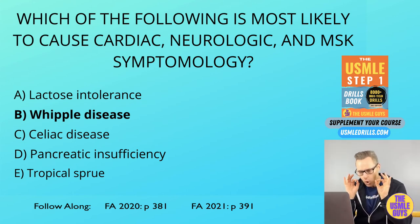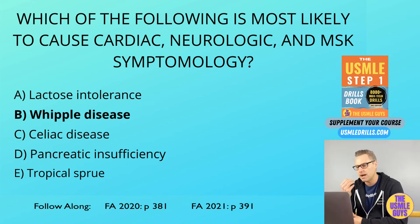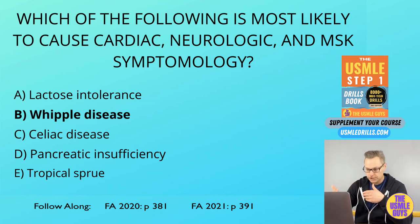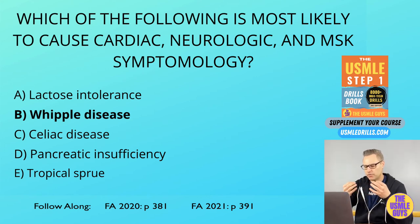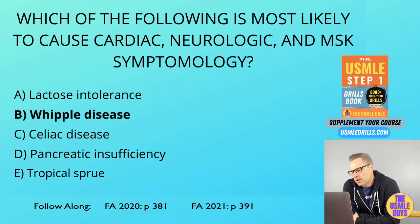No matter what we're dealing with, if we see malabsorption, patients typically develop diarrhea, steatorrhea, weight loss, weakness, and — if long-term — deficiencies of fat-soluble vitamins and even minerals. Starting with lactose intolerance: this is caused by a deficiency of the lactase enzyme. Typically, as someone ages, they don't create as much lactase. Certain viral illnesses can cause villus injury causing the same problem. Patients with lactase deficiency develop an osmotic diarrhea with a decreased stool pH.